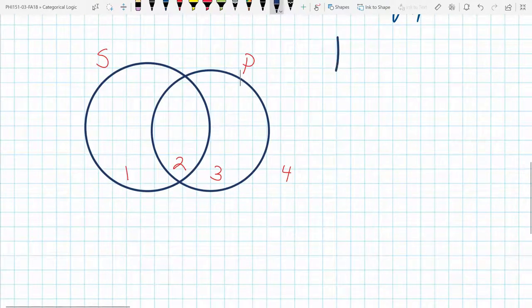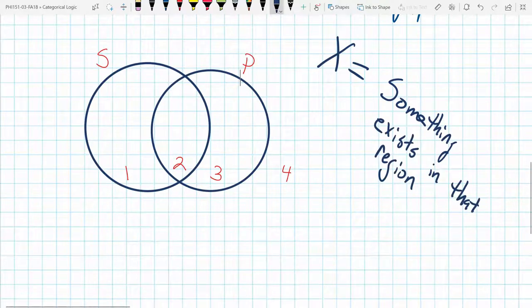When we write X, what we're saying is something exists in that region. Could be more than one, but at least one. So if we have an X in this region, for example, in region 2, well, then we're making the claim that there's at least one thing of the set of all S's and the set of all P's that exists.